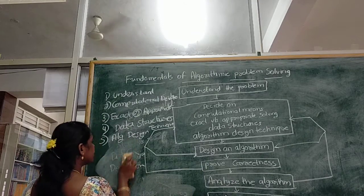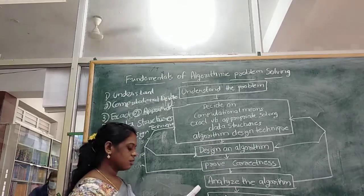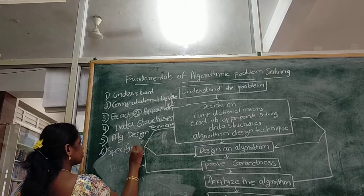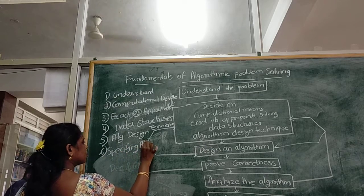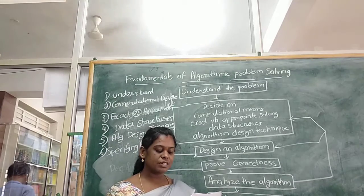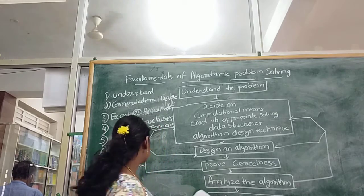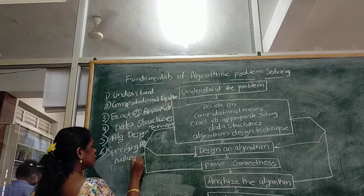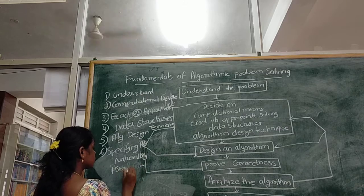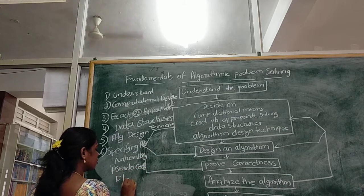After designing the technique, there are methods of specifying the algorithm — how you are going to represent the algorithm. There are three ways: first is natural language, next is pseudocode, and the last is flowchart.